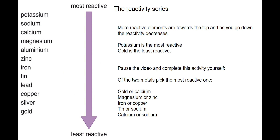The reactivity series is just a list of metals, where the most reactive is at the top and the least reactive is at the bottom. So here, potassium is the most reactive, and as we go down, reactivity decreases all the way to the bottom, until we get to gold, which is the least reactive.